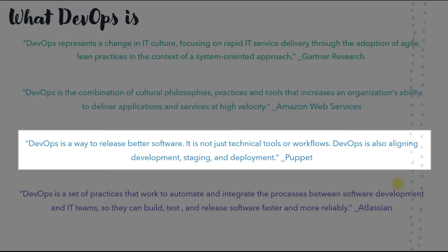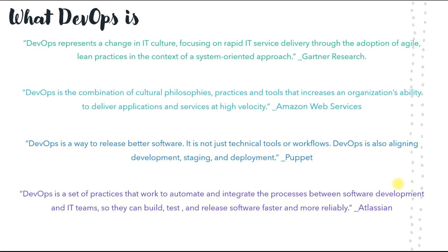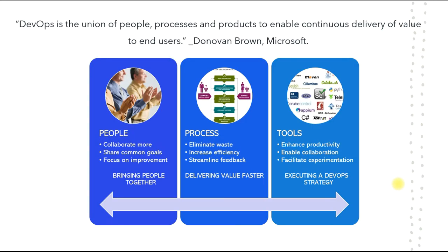DevOps is the combination of cultural philosophies, practices, and tools that increases an organization's ability to deliver applications and services at high velocity. DevOps is a way to release better software — it is not just a technical tool or workflow. It is about aligning development, staging, and deployment together. Essentially, DevOps is about bringing people, processes, and tools together. When you bring people together, they collaborate more, share common goals, and focus on improvements. Imagining multiple departments working together with a common goal — that is exactly what DevOps brings.